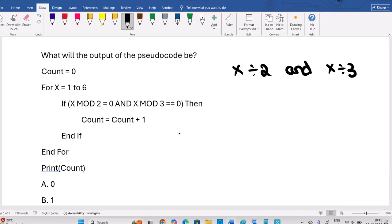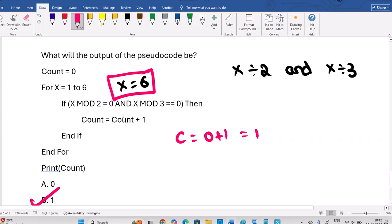So count is 0. Only X value 1, 2, 3, 4, 5, 6, X value 6 only will satisfy this condition. X value 6, 6 is divided by 2, 6 is divided by 3. Then only you can enter. So count will become 0 plus 1, 1. So finally, count will be 1 only. Finally, count will be 1.